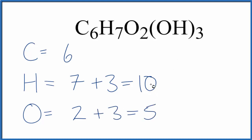So six plus 10 is 16, plus five. We have a total of 21 atoms for C6H7O2(OH)3. So remember the three, that goes to everything in the parentheses there.